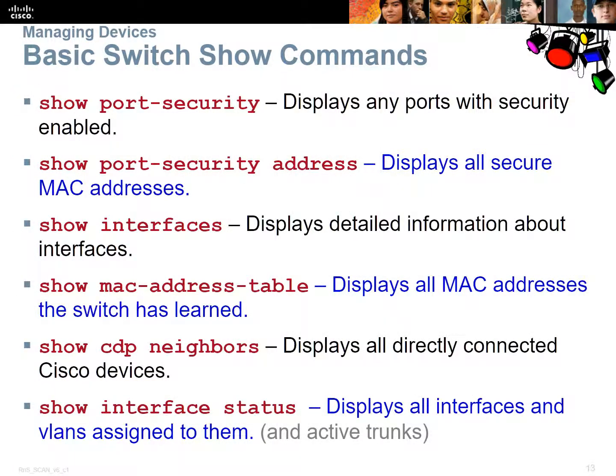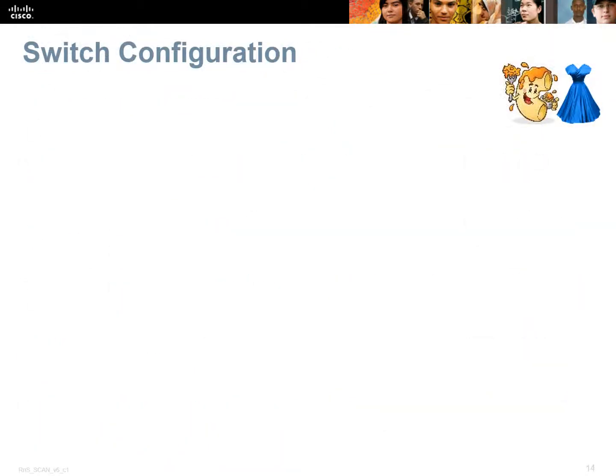Port security is a very important factor in securing your network at layer 2. Key show commands include: show port security, show port security address, show interface, and show MAC address table to see all learned MAC addresses. Also show CDP neighbors and show interface status. On a router you'd use show IP interface brief; on a switch, show interface status gives you the same sort of information.